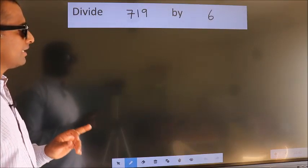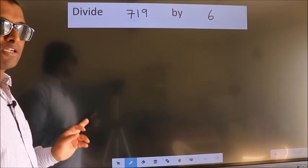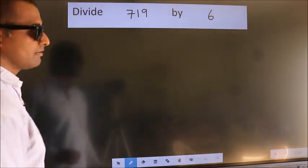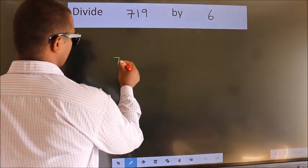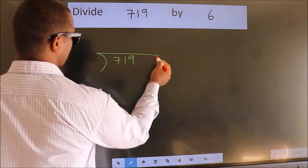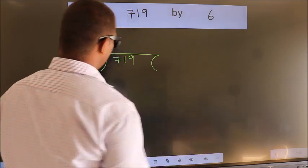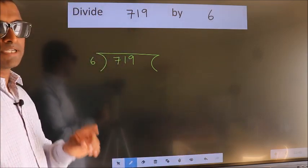Divide 719 by 6. To do this division, we should frame it in this way: 719 here, 6 here. This is your step 1.